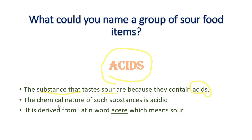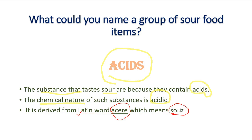The chemical nature of such substances is acidic. So next time when someone asks you why lemon tastes sour, you can answer: lemon tastes sour because it contains acids, and the chemical nature of lemon is acidic. Do you know where the word 'acid' comes from? It is from a Latin word 'acer' — Latin is a language just like Hindi and English — and 'acer' means sour.